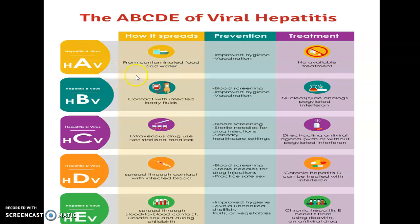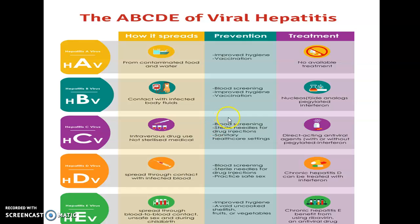For Hepatitis B: mode of transmission is contact with infected body fluids; prevention includes blood screening, improved hygiene, and vaccination; treatment includes nucleotide analogs, pegylated interferon. For Hepatitis C: spread through intravenous drug use and non-sterilized medical equipment; prevention includes blood screening, sterilized needles for drug injection, and sanitary health care.